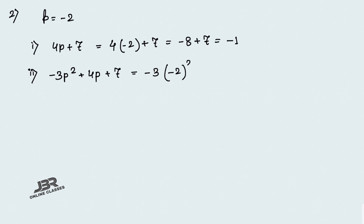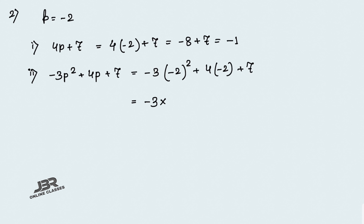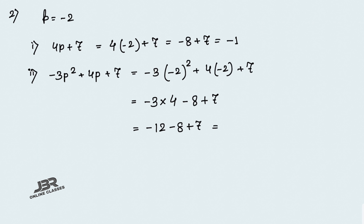Next: minus 3 into (minus 2)² plus 4 into (minus 2) plus 7. Now, (minus 2)² — the power is 2, which is an even number, so negative becomes positive. 2² equals 4, so we write plus 4. Then 4 into (minus 2) equals minus 8, plus 7. So minus 3 into 4 equals minus 12, minus 12 minus 8 equals minus 20, plus 7. Final answer: minus 13.